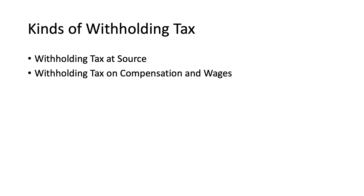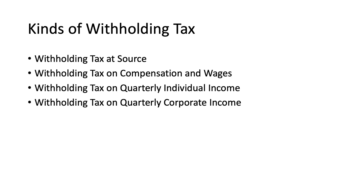There are five kinds of withholding taxes: withholding taxes withheld at source, withholding tax on compensation and wages, withholding tax on quarterly individual income, withholding tax on quarterly corporate income tax, and withholding tax on government monetary payments.